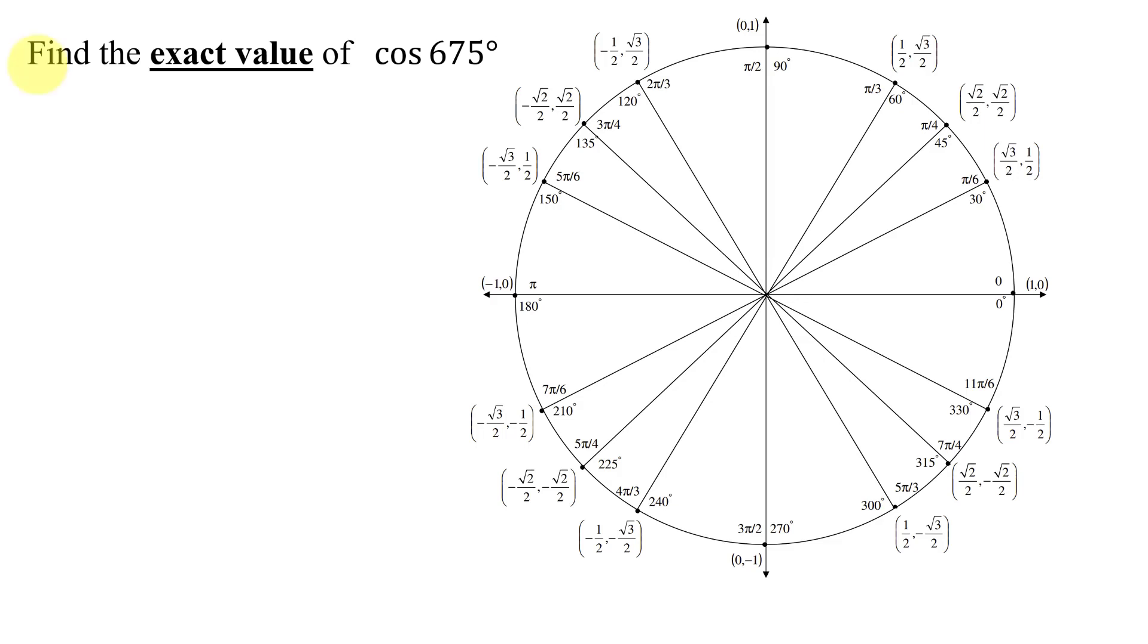In this example, I need to find the exact value of the cosine of 675 degrees. As the problem says exact value, this means don't use your calculator because it will give you a decimal approximation. I need to use the unit circle shown over here.